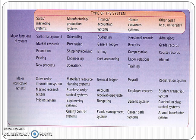Various examples under the Transaction Processing System: for the sales or marketing system, sales management, market research, promotion, pricing, and new products are the major functions of TPS. For human resource systems, personnel records, benefits, compensation, labor relations, and training are the major functions of the system.